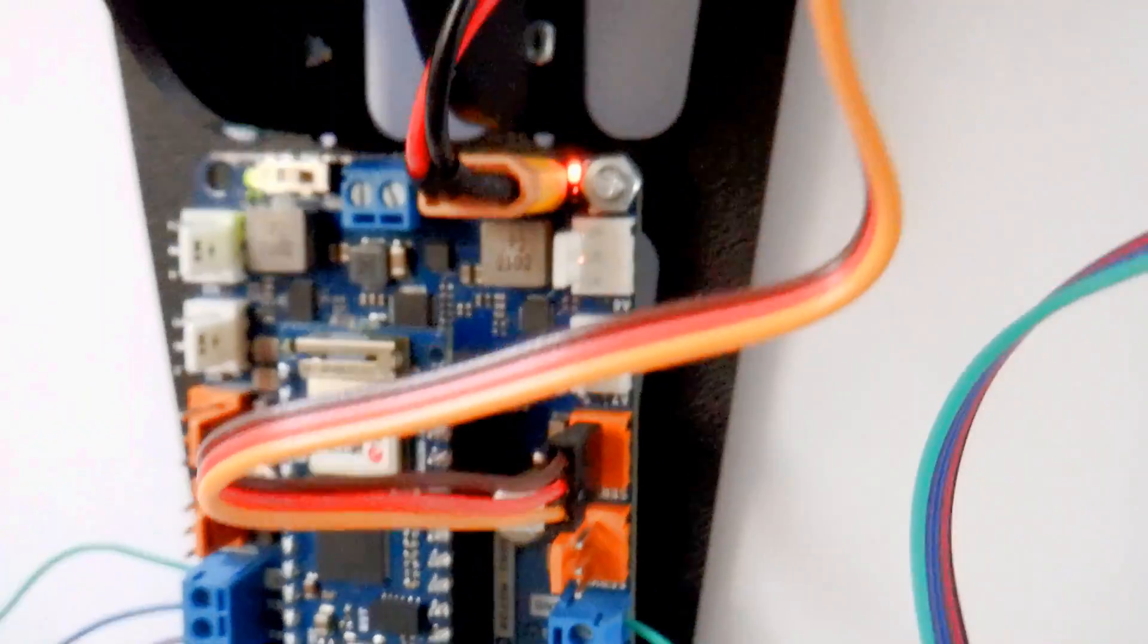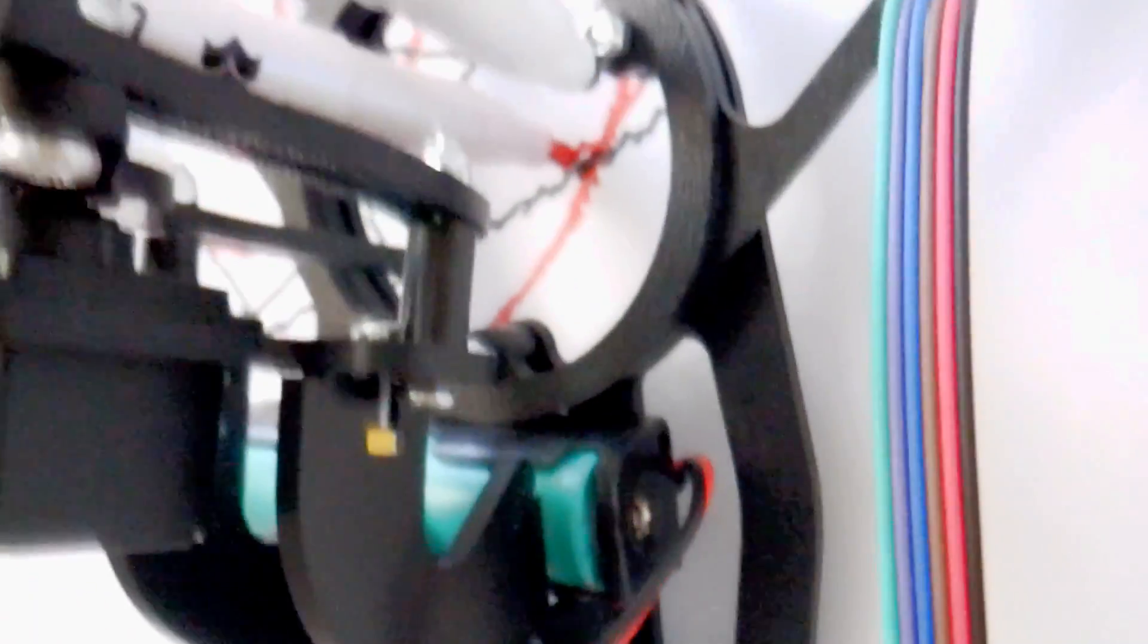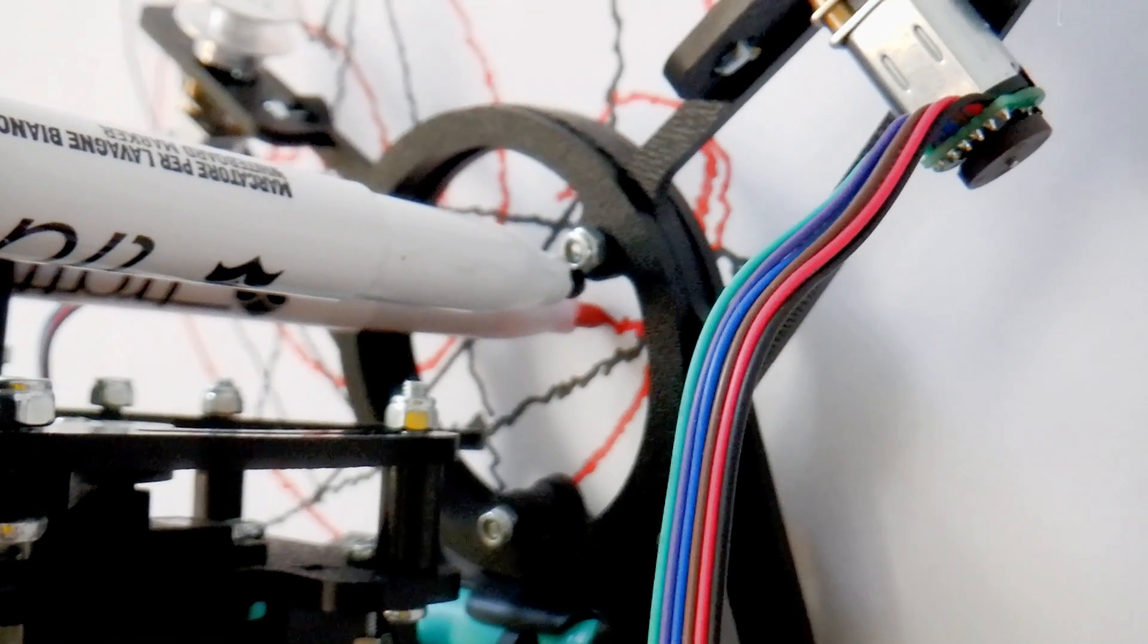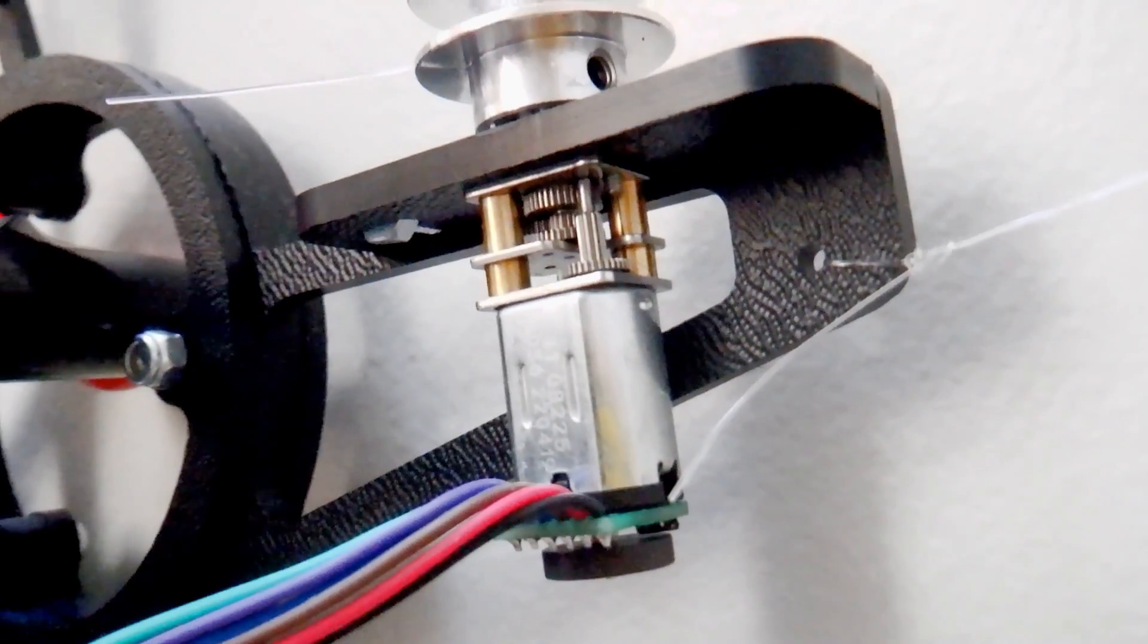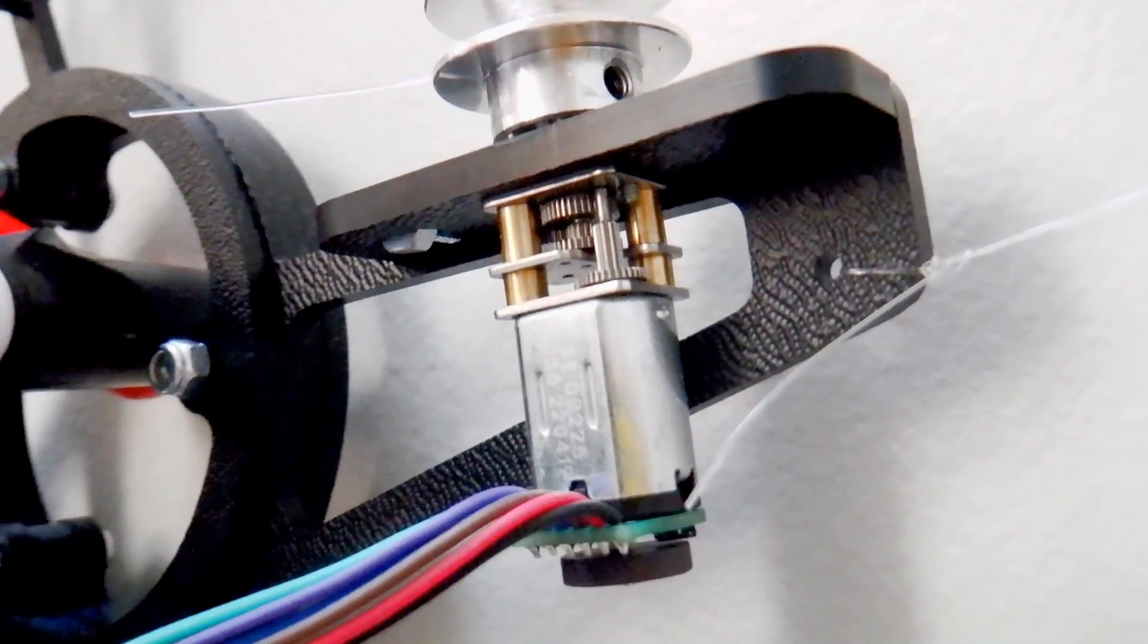The motors are controlled by a Nano 33 IOT and a Nano motor carrier. It can draw in two different colors. For movement, it uses two DC motors with spools of string attached to them. The strings go around two pulleys and back to the robot.